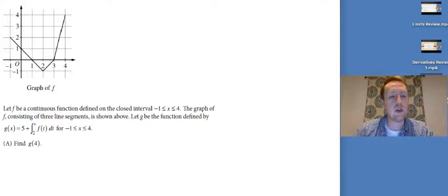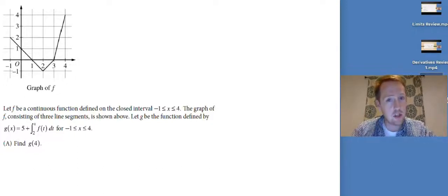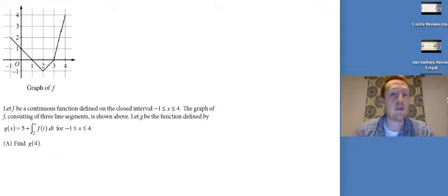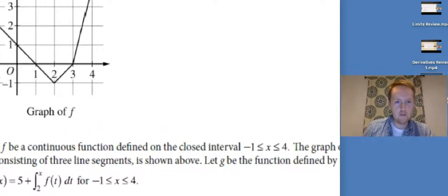Let f be a continuous function defined on the closed interval negative one to four. The graph of f consists of three line segments. Let g be defined by g(x) equals five plus the integral from two to x of f(t) dt. We want to find g(4). This isn't an anti-differentiate situation — we recognize geometrically what's happening. The definite integral is the area between the curve and the x-axis, so we break it into shapes.